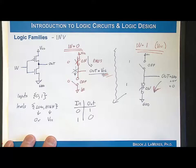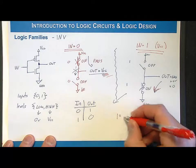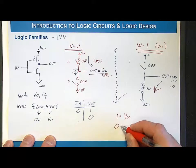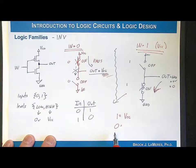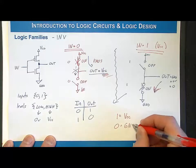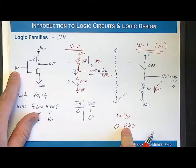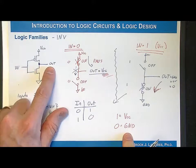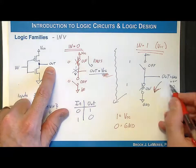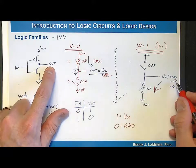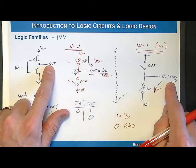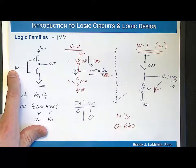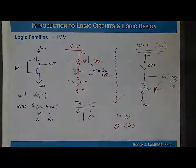In CMOS, a logic 1 is the highest voltage in the system, VCC, and a logic 0 is the lowest voltage in the system. We tested this by applying those to the inputs, and the output was simply shorted to VCC or ground depending on the desired output value. This inherently verifies that the inputs to these gates will be VCC and ground, since the outputs of one gate drive the inputs of the next. That is a CMOS inverter.